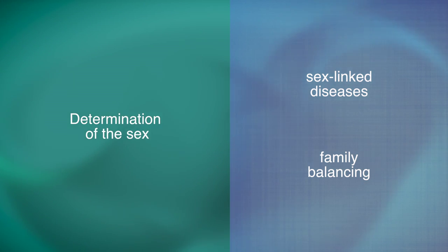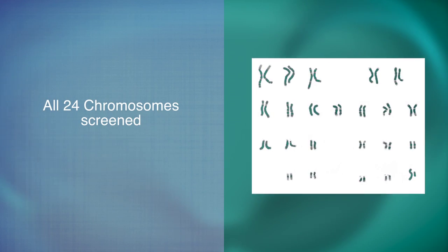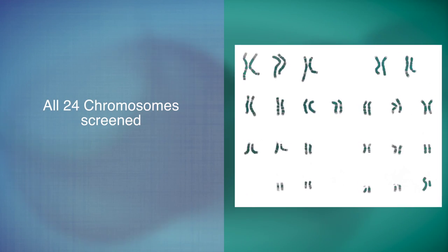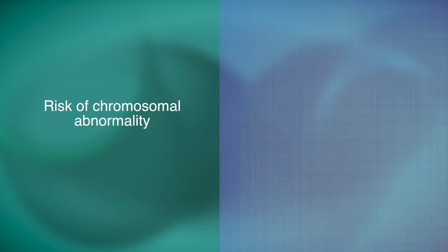Now, with newer technology, such as array comparative genomic hybridization, aCGH, all 24 chromosomes can be screened in the pre-implantation embryo, prior to their transfer to the uterus of the intended mother or gestational surrogate. Therefore, your chance of conceiving a baby with a chromosomal abnormality will be reduced by more than 90% after PGS.